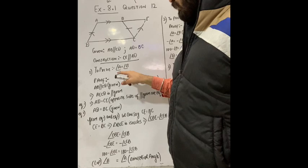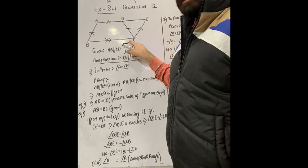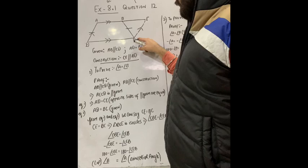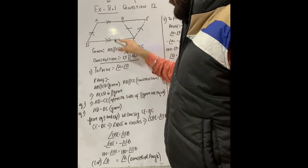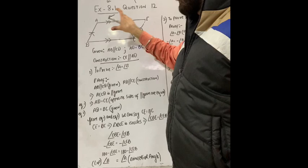Now we have to prove angle A is equal to angle B. Proof: AB is parallel to DC — this is given in the question. And AD is parallel to CE — this is by construction. These two conditions imply that AECD is a parallelogram.